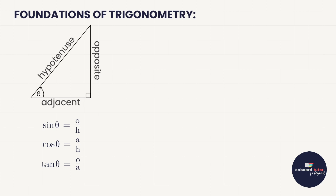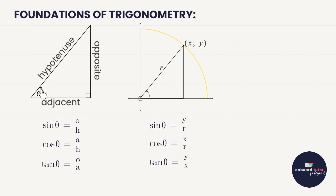Trigonometry finds its roots in triangles — specifically right-angle triangles, which is where we started with trig. In every right-angle triangle there is a hypotenuse, and then we refer to a reference angle with a side adjacent to it and a side opposite to it. So sine is opposite over hypotenuse, cos is adjacent over hypotenuse, and tan is opposite over adjacent.